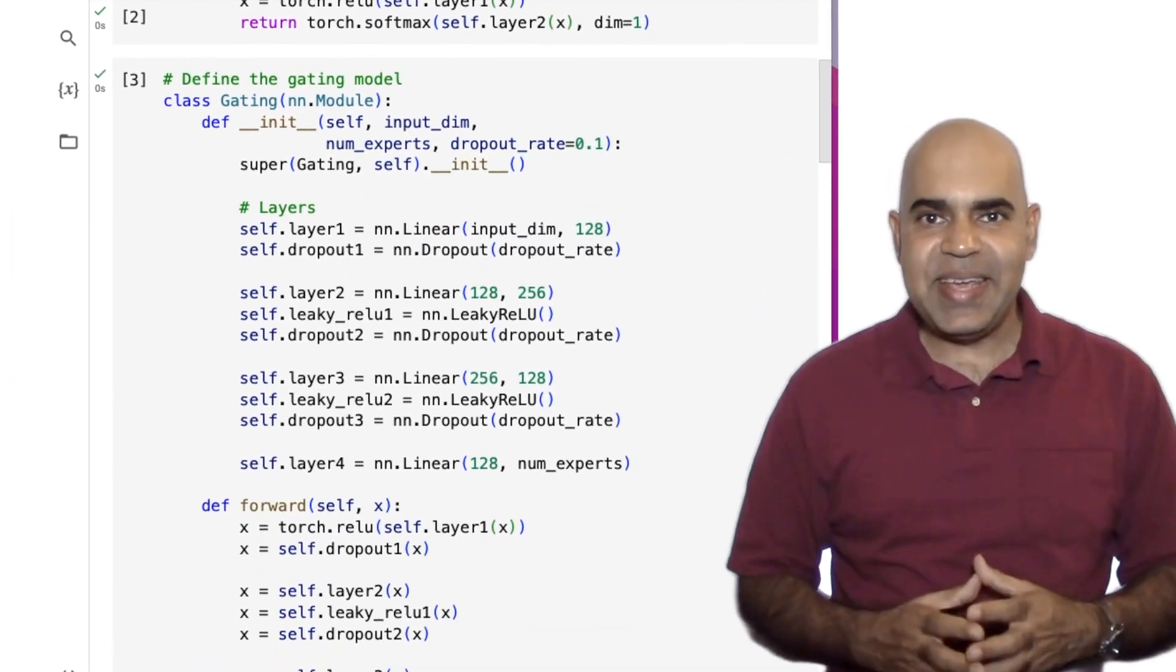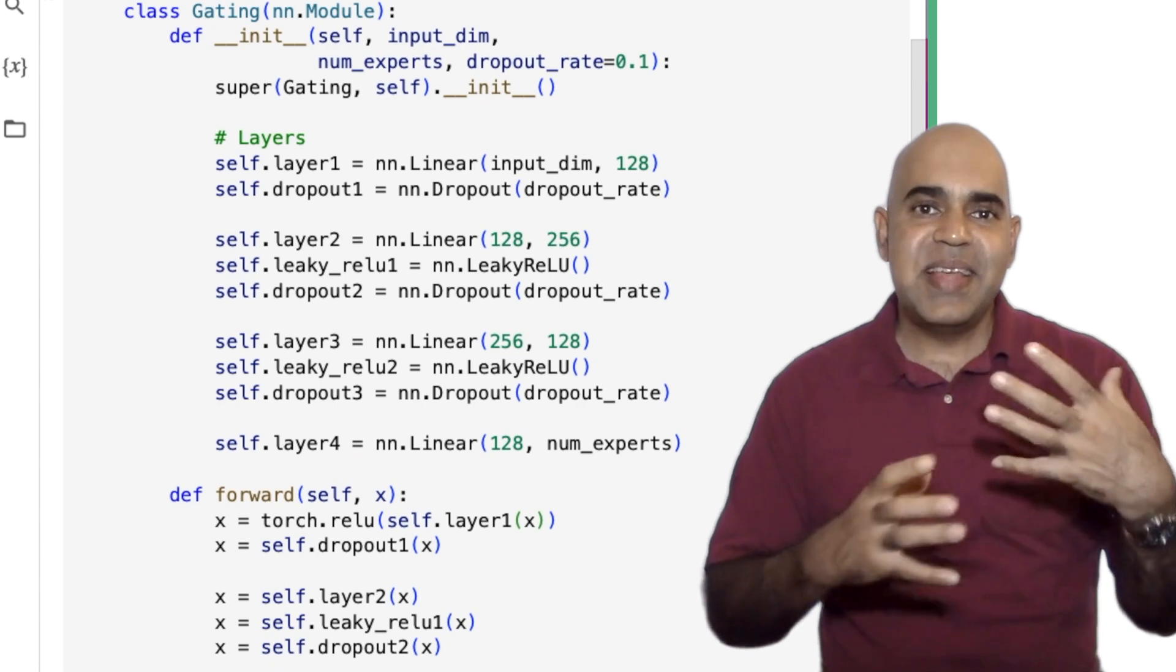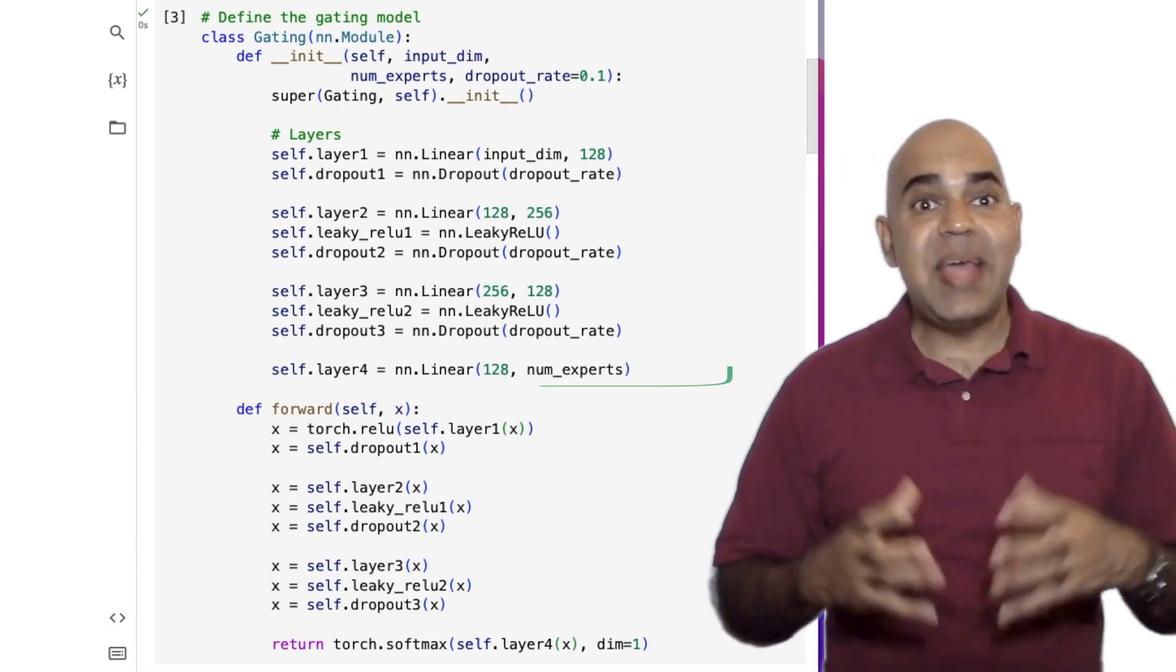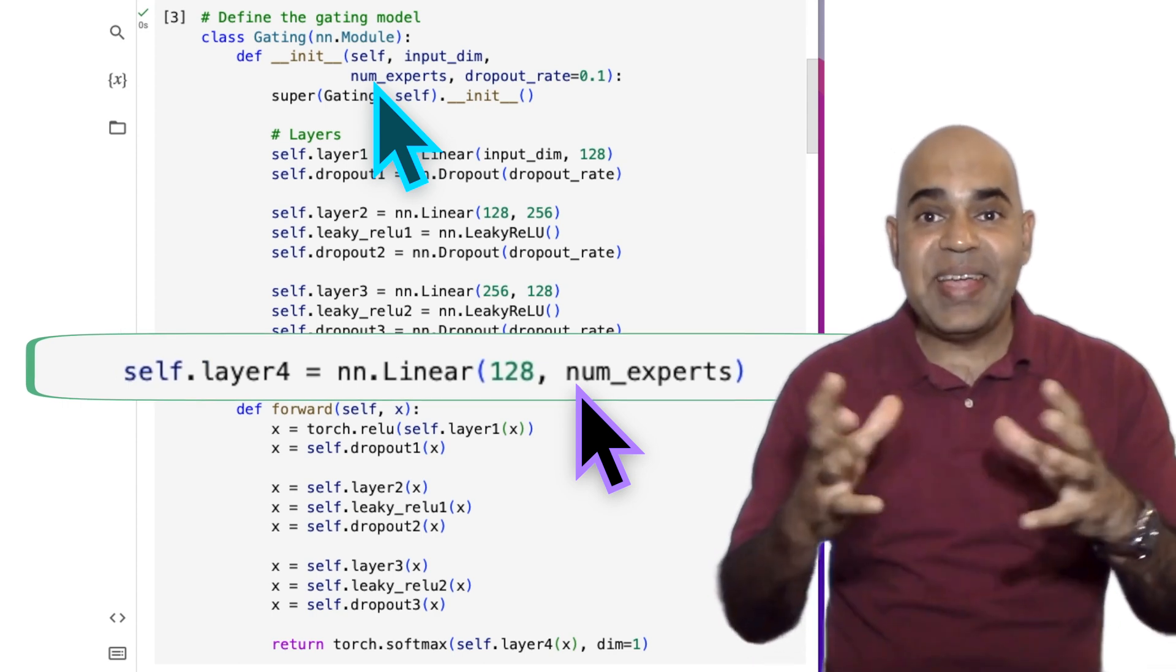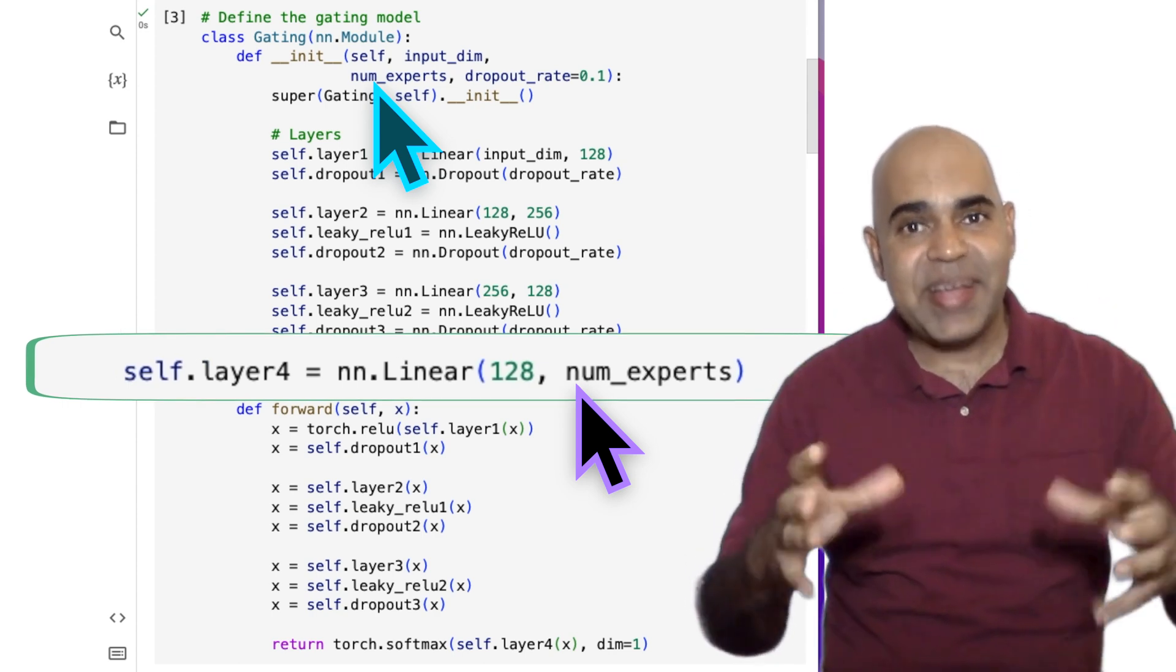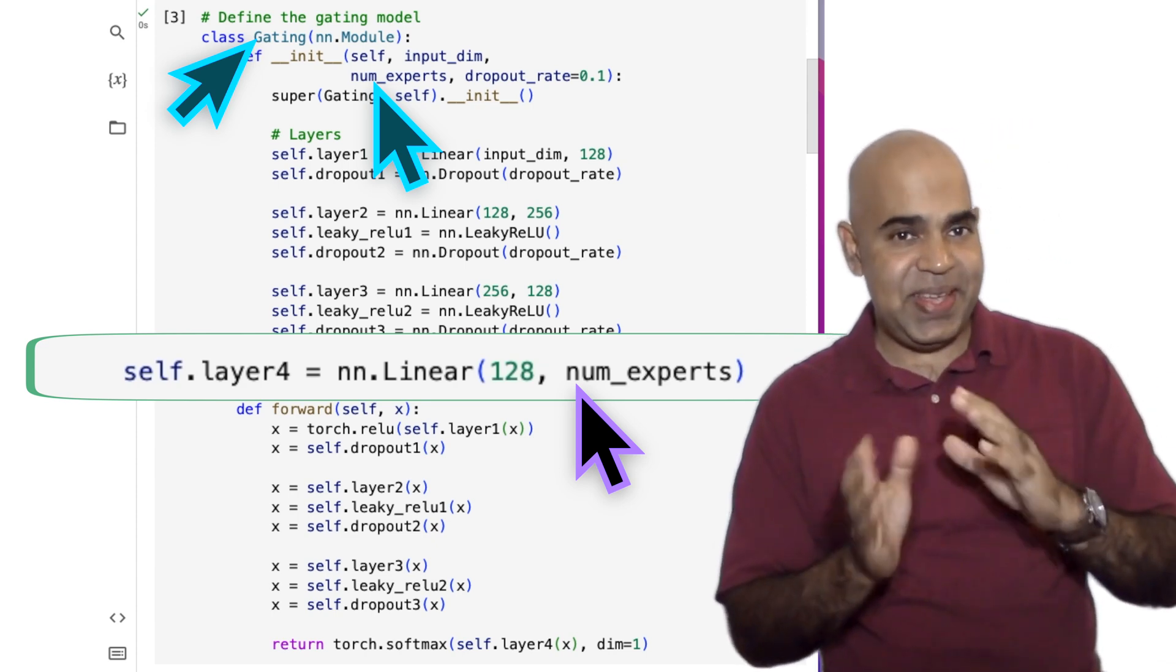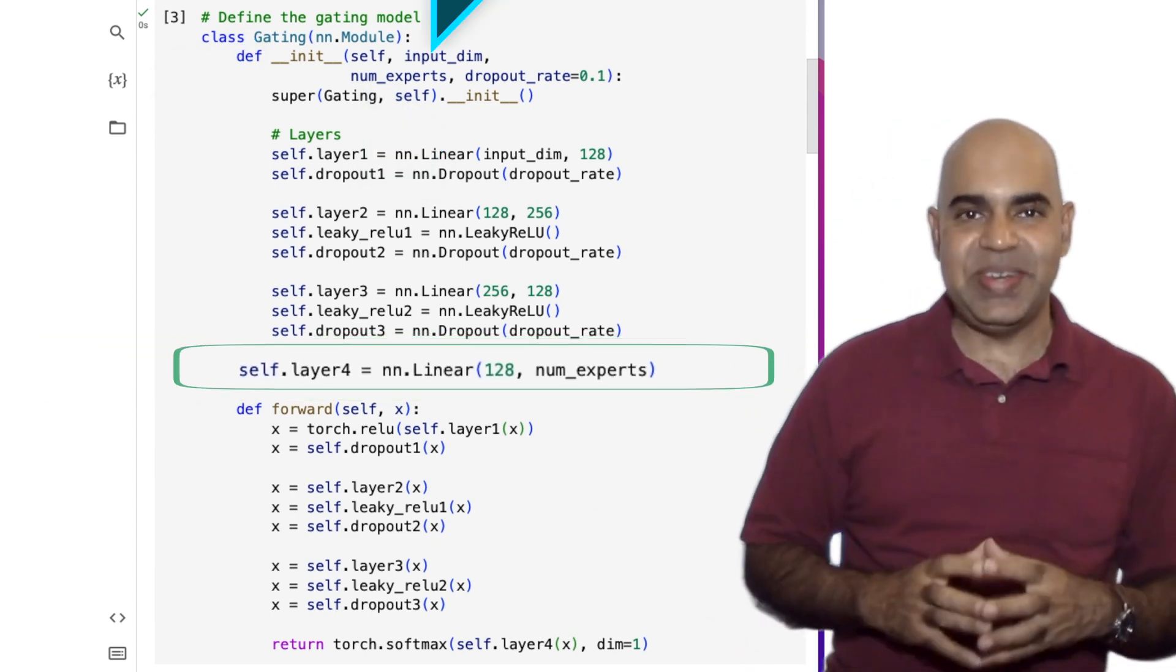Here is our gating network. Of course, it is slightly more complex with more layers than the expert model. The output dimension of the gating network is equal to the number of experts, because this gating network assigns weights to each expert based on the input data.